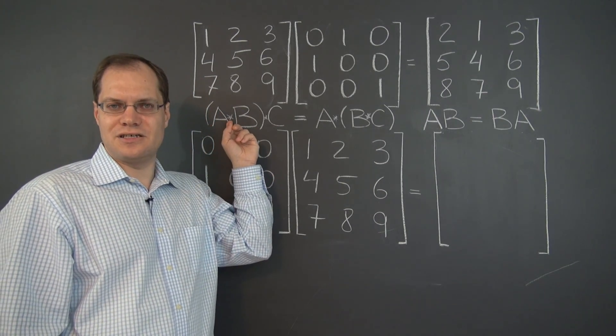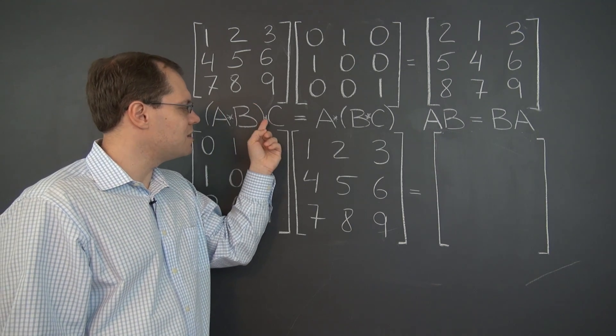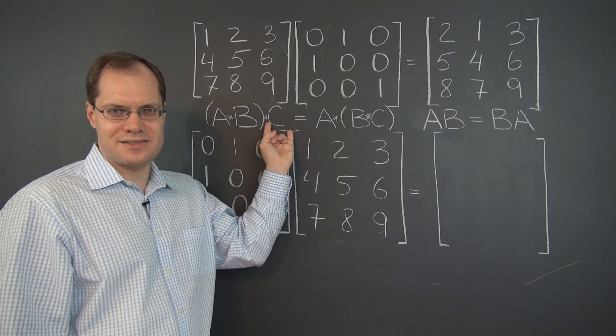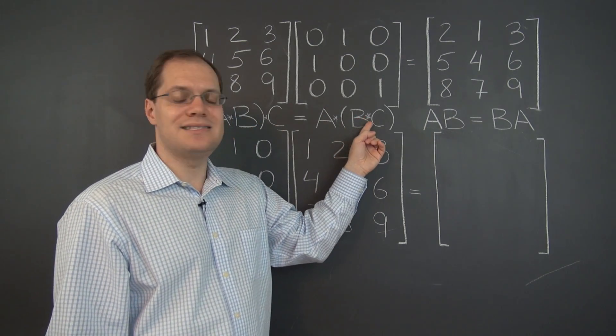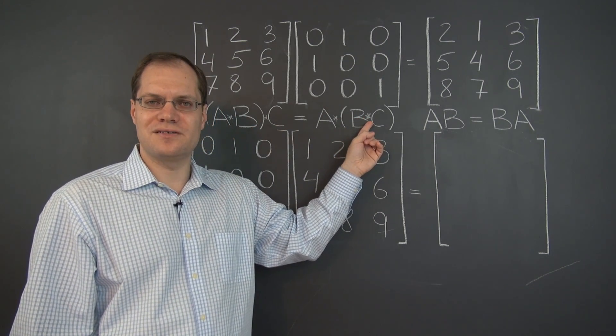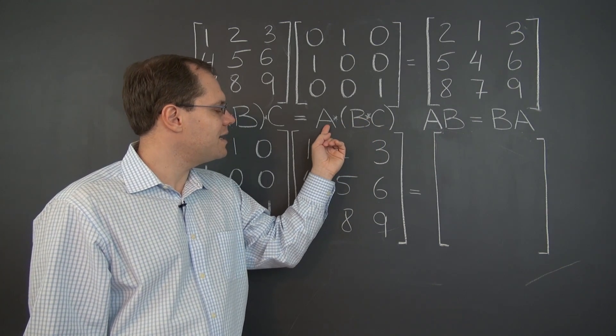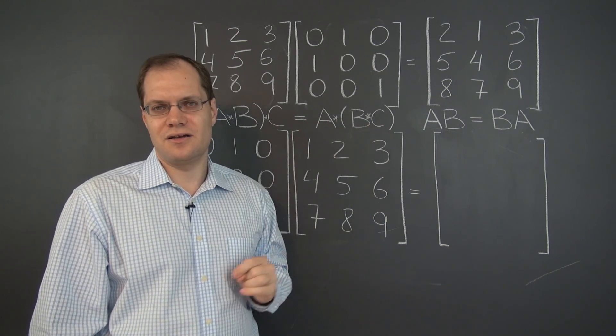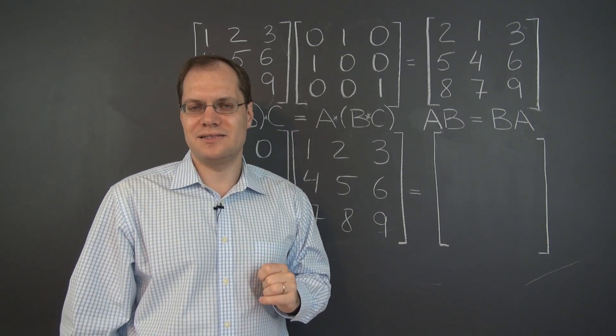On the right, the second multiplication is done first, and then it's multiplied by A, and the order is preserved. It's A times the result of the product of B and C.